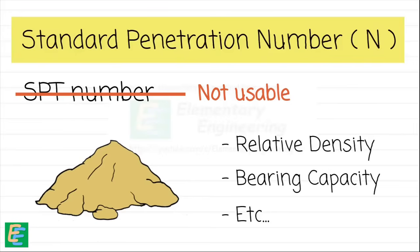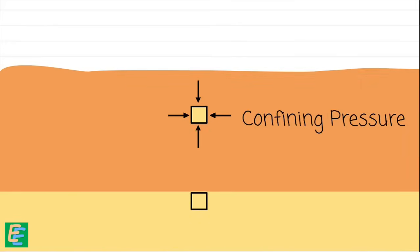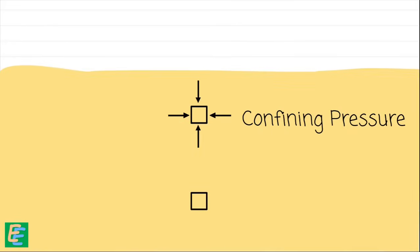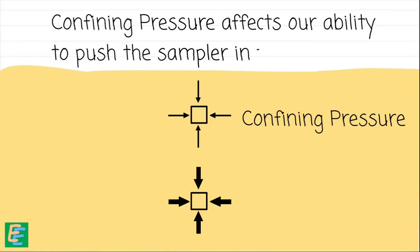But we can't use this SPT number as it is. Here is why: every soil particle experiences a pressure from all directions by the surrounding soil. This pressure is called confining pressure. As we go deeper, the soil becomes burdened by its own weight, which increases the overburden pressure on the soil below. And as the overburden pressure increases, it also leads to an increase in the confining pressure. This pressure affects our ability to push the sampler into the ground.